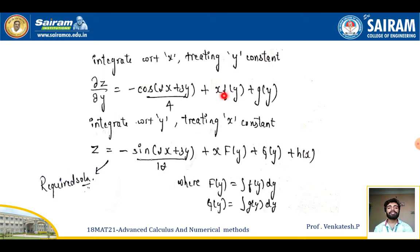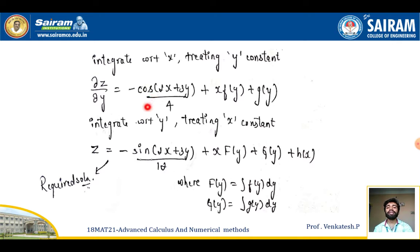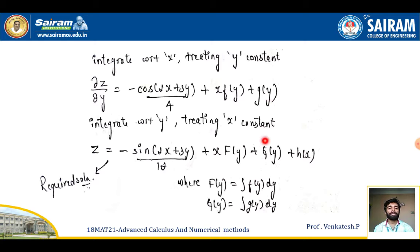Plus x·f(y) + g(y). Now to eliminate ∂z/∂y, integrating with respect to y treating x constant, I get z = sin(2x + 3y)/12 + x·F(y) + G(y), where F(y) = ∫f(y)dy and G(y) = ∫g(y)dy. This is the required solution for the given equation.